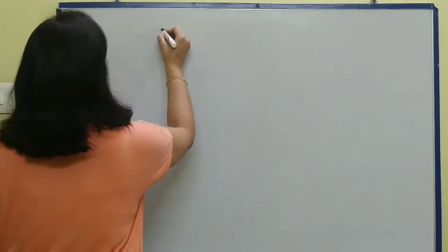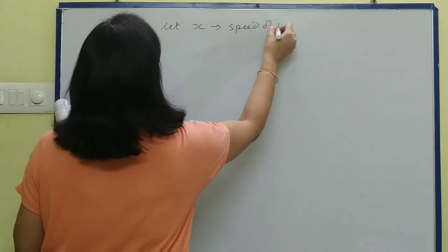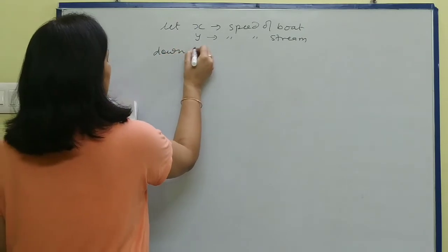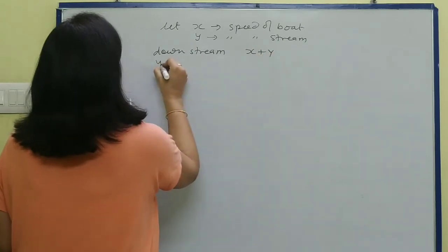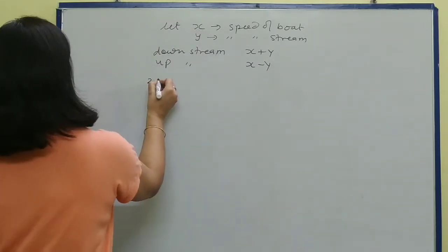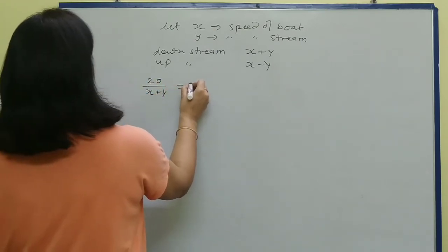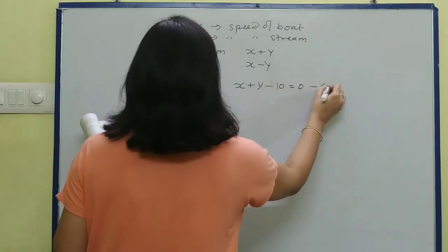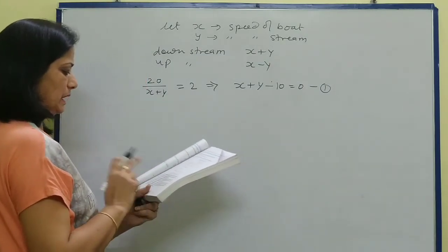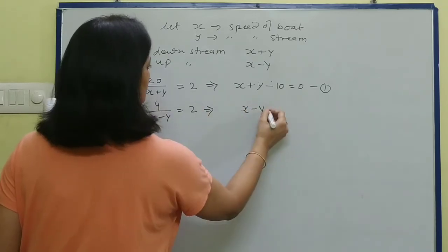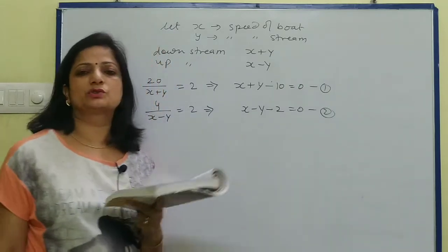Word problem: Ritu can row downstream 20 km in 2 hours. For downstream problems, let x = speed of boat and y = speed of stream. Downstream speed = x + y, upstream speed = x - y. Distance upon speed = time, so: 20 upon (x + y) = 2, giving x + y - 10 = 0. For upstream: 4 km in 2 hours, so 4 upon (x - y) = 2, giving x - y - 2 = 0. Solve by cross multiplication.